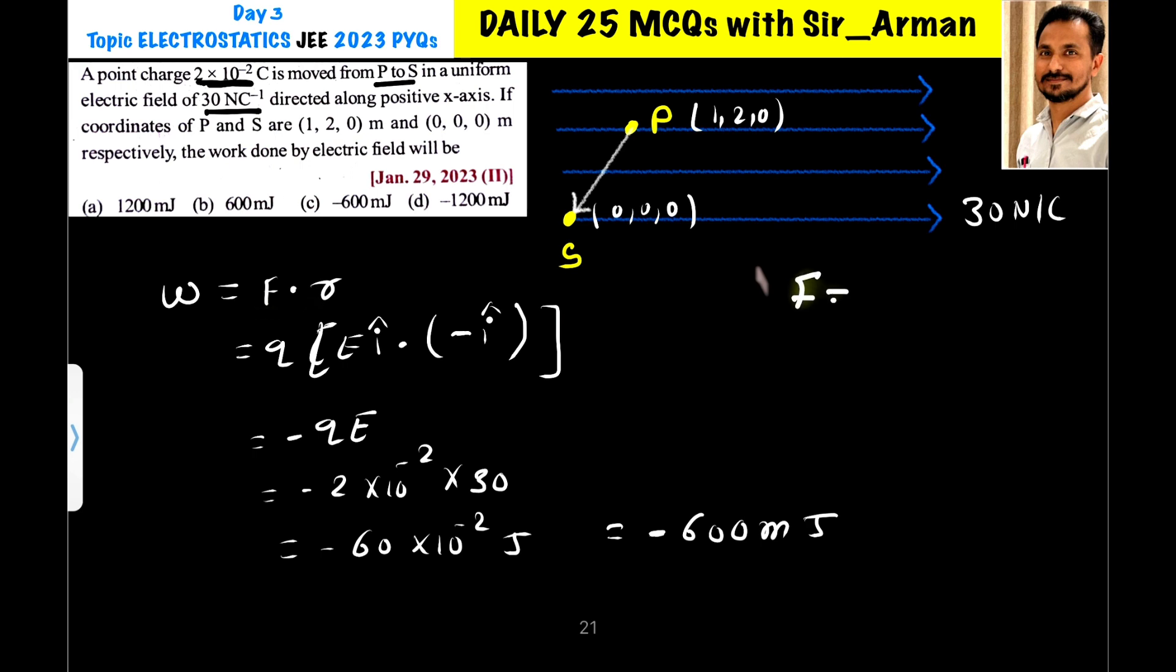Here force into displacement. Now we know that force equals Q into E. Then work done equals Q E dot R, the dot product of electric field and the displacement.